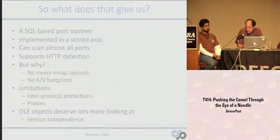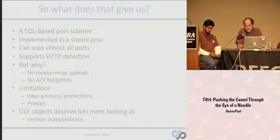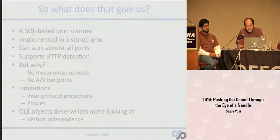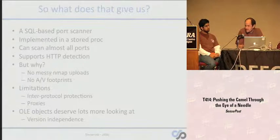It can scan almost all ports. Because of some protection built in for cross-protocol attacks, the IE objects can't connect to all ports — but it can only not connect to about six ports. So out of 65,536 ports we can't scan six of them, and in fact they're often not the ports you're most interested in anyway. Proxies can be an issue — if the machine has a proxy set, traffic will be directed through there. But there's an early object method to disable the proxy. We figure OLE objects deserve more looking at — one thing it buys you is platform independence, and SQL Server across multiple versions supports this functionality.